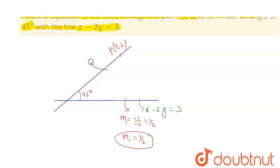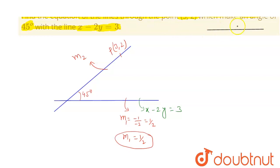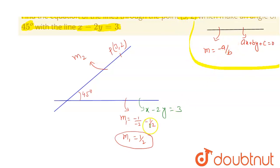Let's say m1 is the slope of the given line and m2 is the slope of the required line. There is a concept: if you have a line with equation ax plus by plus c equals 0, then the slope of this line will be minus a divided by b. This is the concept we have used to find that m1 equals one-half.